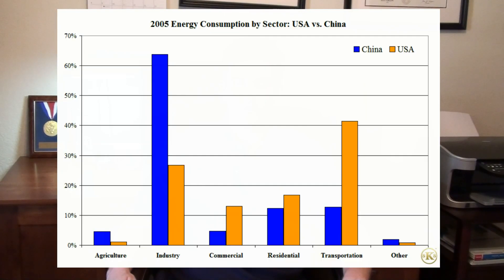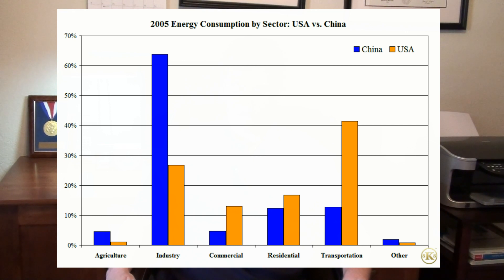A comparison between China and the United States is especially instructive. As expected, there was a substantial gap between China and the United States' relative industrial energy consumption. Per capita consumption will be addressed later. The corollary to China's focus on industry is the United States' transportation situation. However, the United States also used more energy for commercial and residential purposes than China. This is likely a result of greater consumer affluence in the United States, along with its focus on a service-based economy.